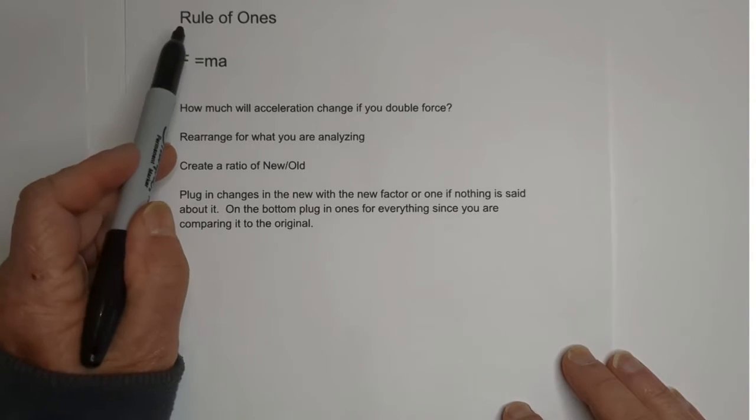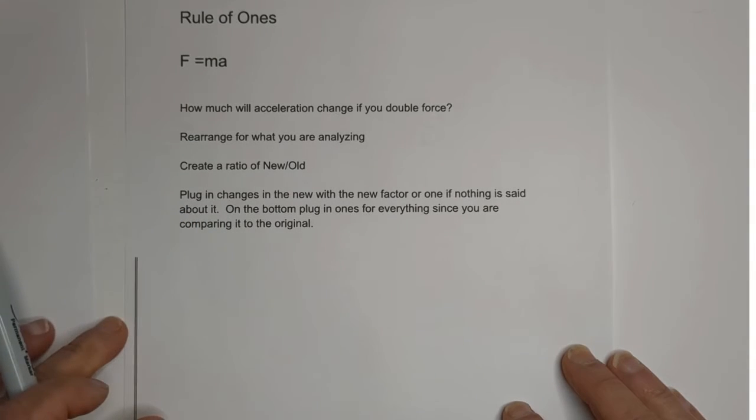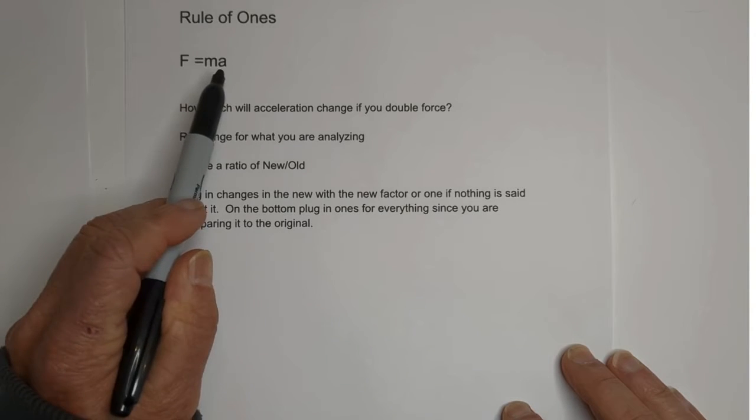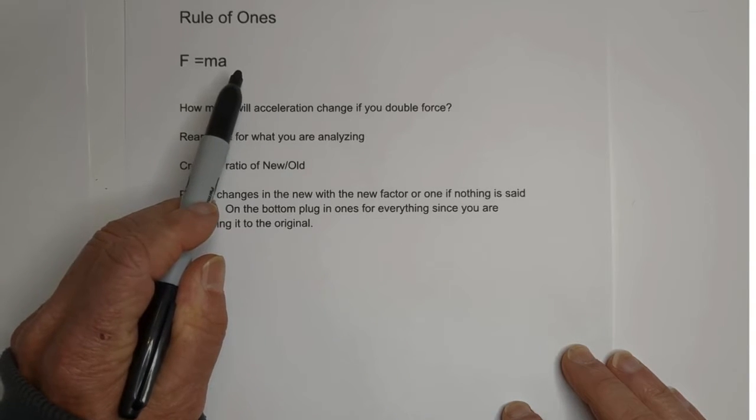Welcome to Moving Math and Science. In this video, let's go over the Rule of Ones. It's used whenever you have an equation and one or two parts of the equation are changed and you want to see how it impacts the other.